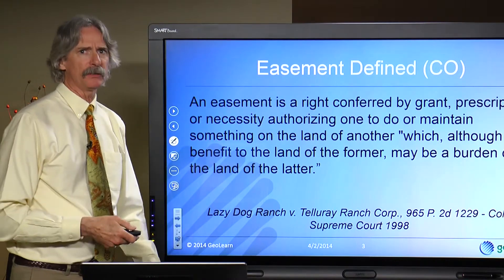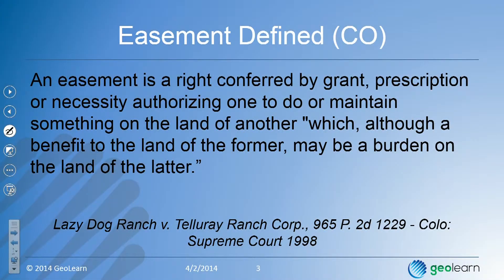Here's a definition of an easement that came out of Colorado: an easement is a right conferred by grant, prescription, or necessity — and we're going to talk about all those later on — authorizing one to do or maintain something on the land of another, which although a benefit to the land of the former may be a burden on the land of the latter. So we start getting the idea we're talking about benefits and burdens here.